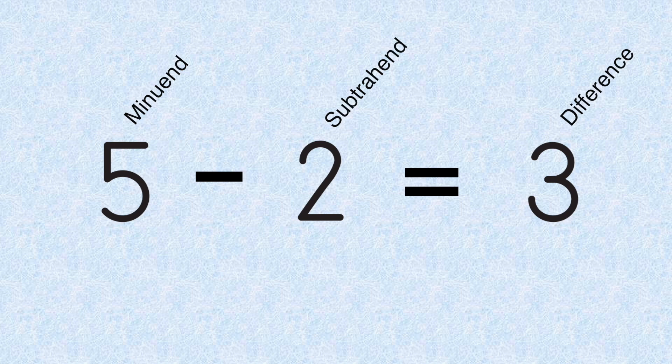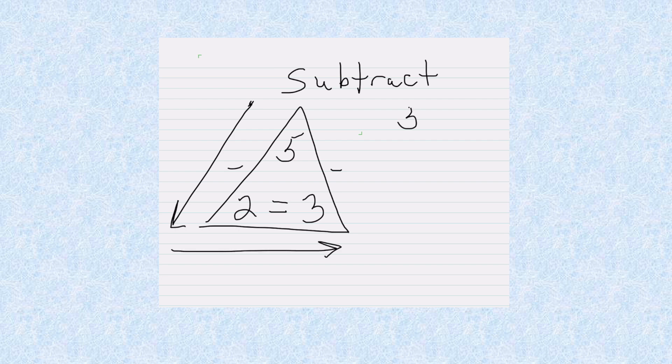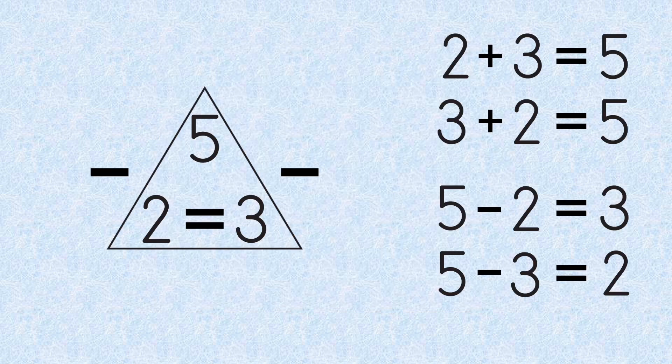When we do subtraction, we start at the top and go down and over. We can add minus signs on the side and our equal sign on the bottom. So now we can find our subtraction sentences. Let's start at the top, go down to the left and over. 5 minus 2 equals 3. Now let's start at the top and go down to the right and over. 5 minus 3 equals 2. And now we've got our two subtraction facts.